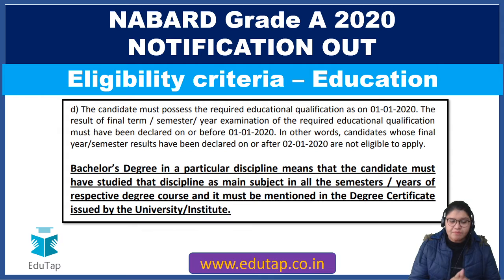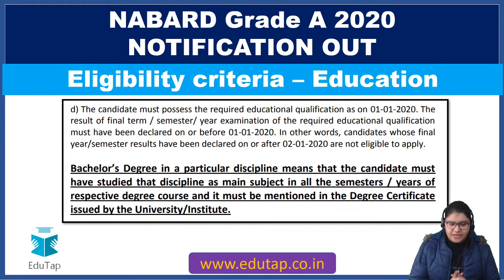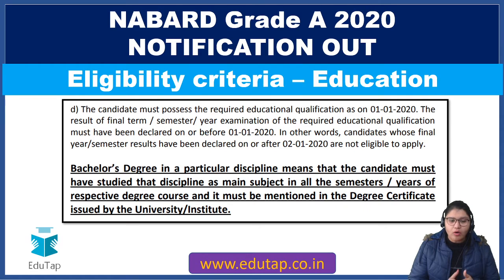An important point: the candidate must possess the required educational qualification as on 1st January 2020. If your final examination results are still awaited, you are NOT eligible to apply. The result of the final term or semester of the required educational qualification must have been declared on or before 1st January 2020. Candidates whose final results were declared after 2nd January 2020 are not eligible to apply.